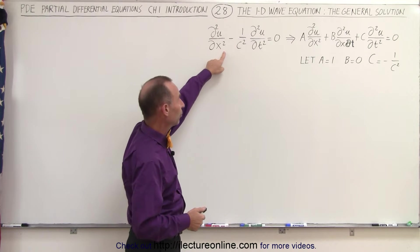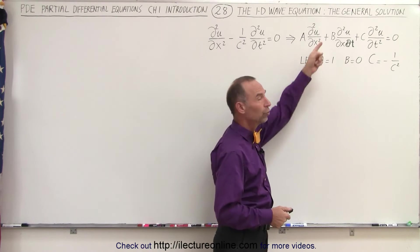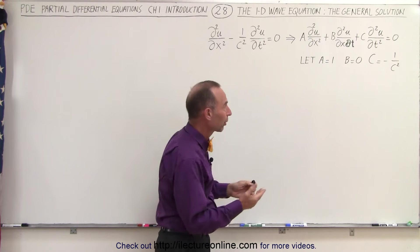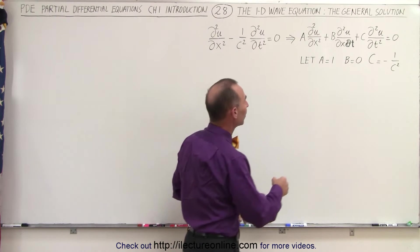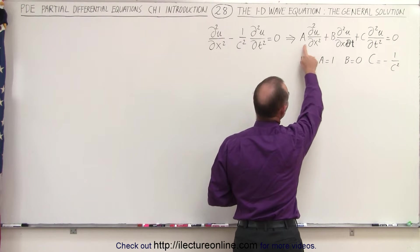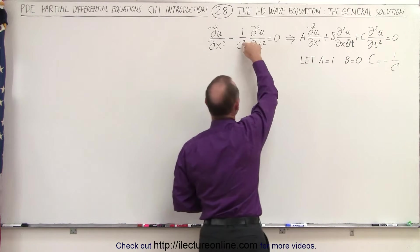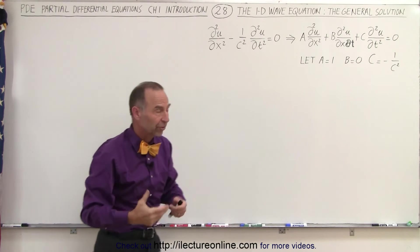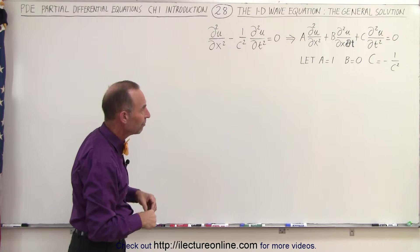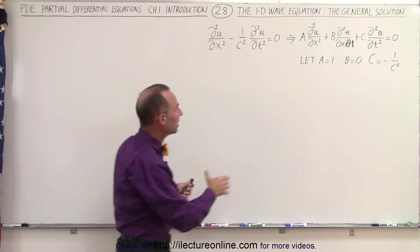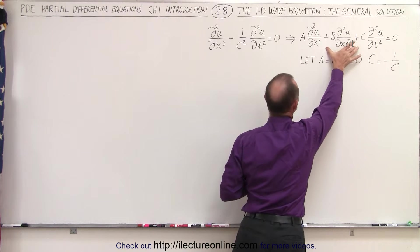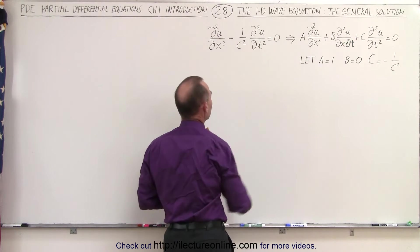We know that this is the 1D wave equation. If we take a look at the reduced or simplified equation we were working with in the previous video, we can see that if we let a equals 1, b equals 0, and c equals minus 1 over c squared, c being the speed of light, the velocity of an electromagnetic wave, then this is really exactly the same thing as what we have over here.